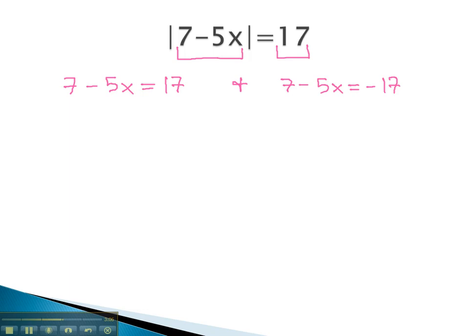This now gives us two equations, which we can quickly solve to find our values for x. Balancing through the equal sign, we first subtract 7 from both sides. This will leave negative 5x equals 10. Finishing the first equation, we divide both sides by negative 5. We now have x equals negative 2.